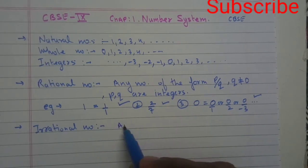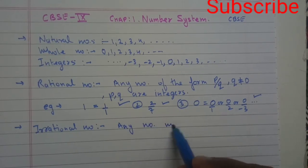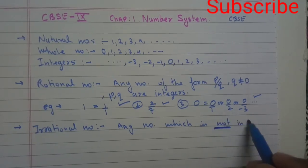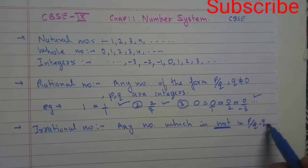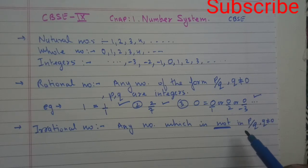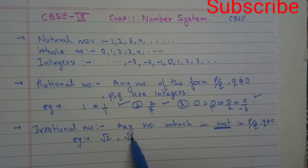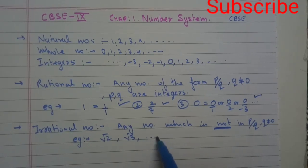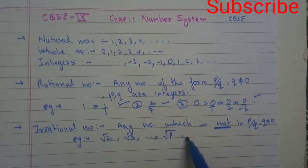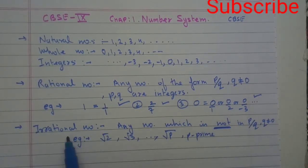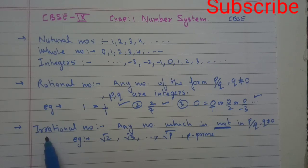The next term is irrational numbers. An irrational number is any number which is NOT in p by q form — any number which we cannot write in p by q form. All such numbers are irrational numbers. For example, root 2 is an irrational number, and root 3 is also an irrational number.